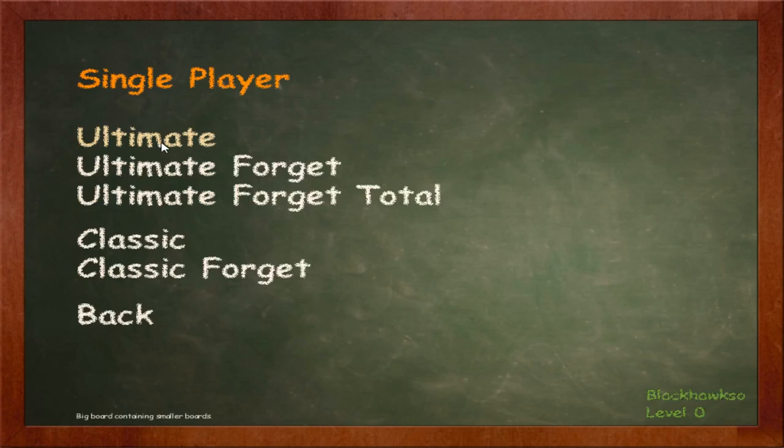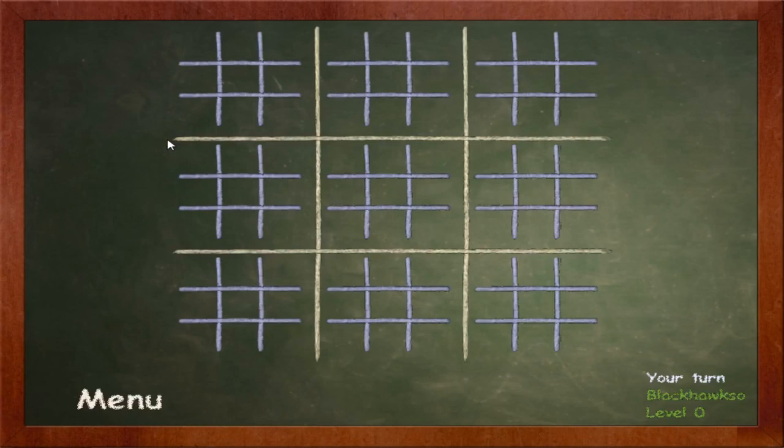But then there is ultimate. Now, this is where it gets confusing. Here you have a big grid. You have got to get your lines in each one of these. If you complete and win one of these squares, you get given the square on the large grid. So one, two, three, one, two, three and so on and so forth. The idea is to win the big grid of noughts and crosses or tic-tac-toe by winning the small ones. Confusing enough.